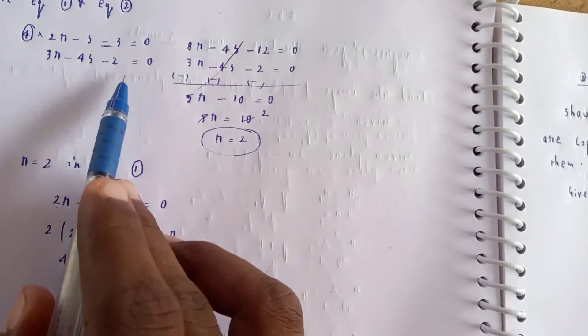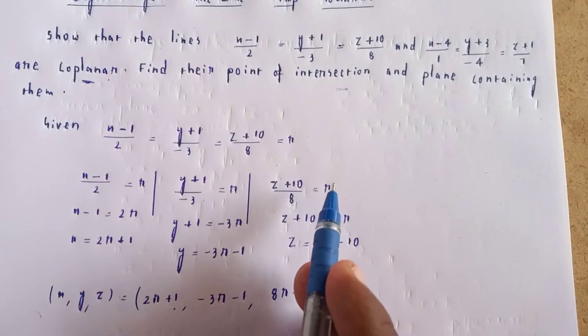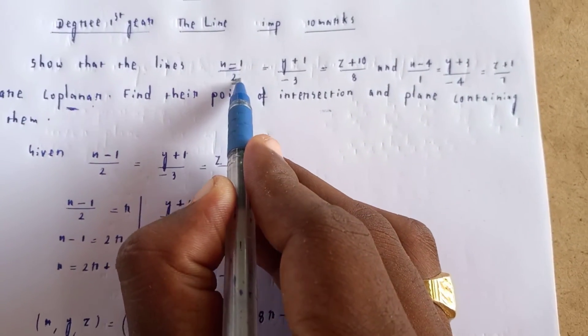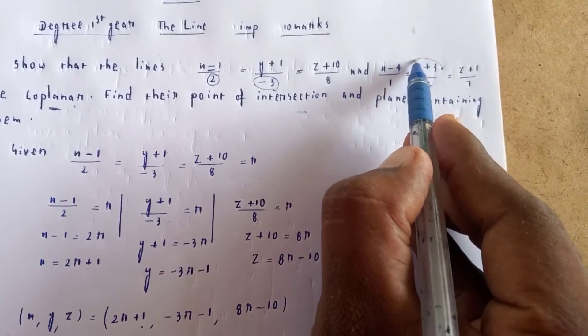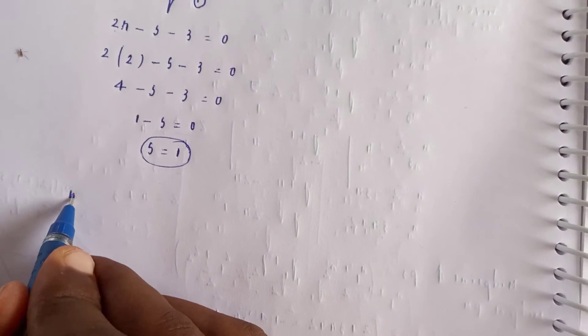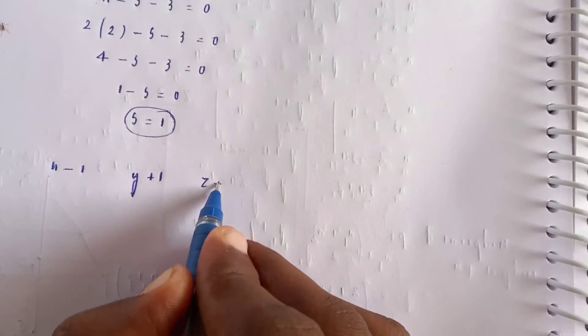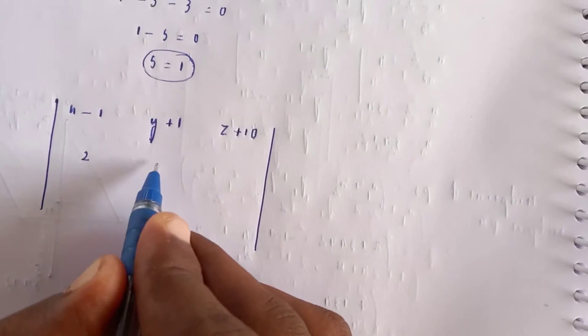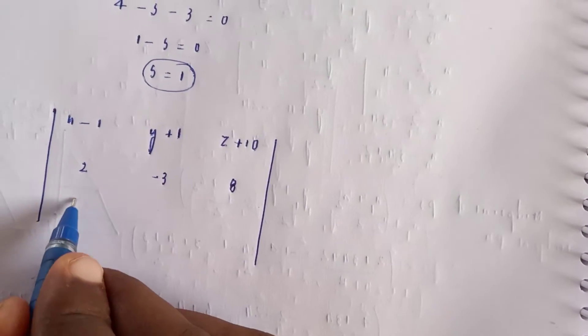Since r and s values satisfy all equations, the lines are coplanar. Now finding the point of intersection and the plane containing them. Setting up the determinant for the plane equation using the first line equation with direction ratios (2, −3, 8) and second line direction ratios (1, −4, 7).